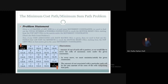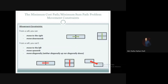Now let's discuss the movement constraints regarding this problem. From a cell, you cannot move to the left, you cannot move upwards, and you cannot move diagonally — neither diagonally up nor diagonally down. These are the movement constraints.